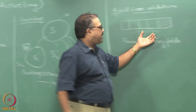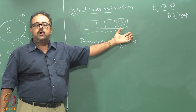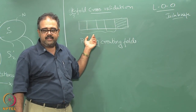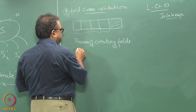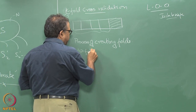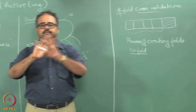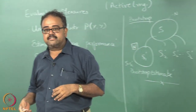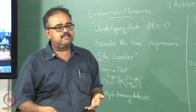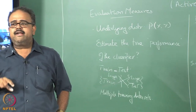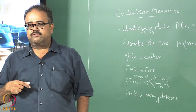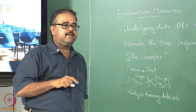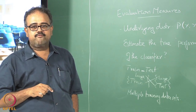I recommend not splitting into so many folds that you have very little data left in each fold. Don't go more than 10 folds — if you manage 10 folds that gives good enough variance reduction. Typically when you report empirical results, you are not expected to do more than 10 folds. If your data size is small, people end up doing only 5 folds.